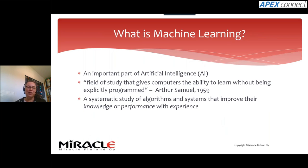So what is machine learning? It's an important part of artificial intelligence — it is kind of the heart or the brain of AI. It's the field of study that gives computers the ability to learn without being explicitly programmed, as Arthur Samuel said in 1959. It is a systematic study of algorithms and systems that improve their knowledge or performance with experience.